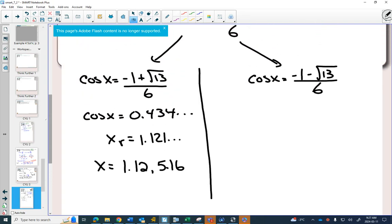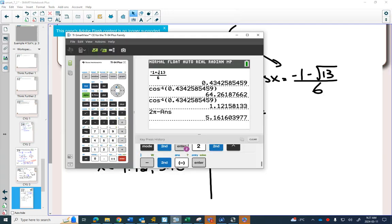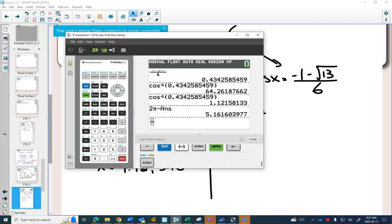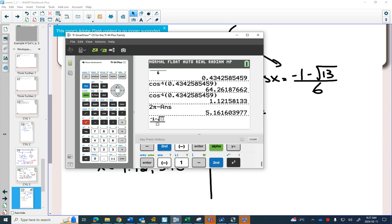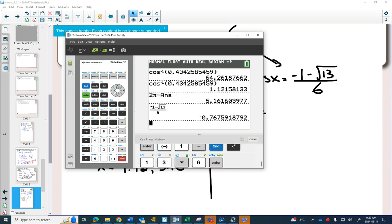Next, on the other side, if I type this into my calculator: -1 - √13 / 6. This time it's negative, so cosx is -0.76.